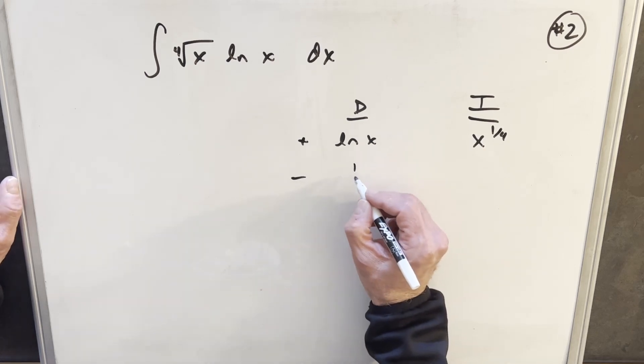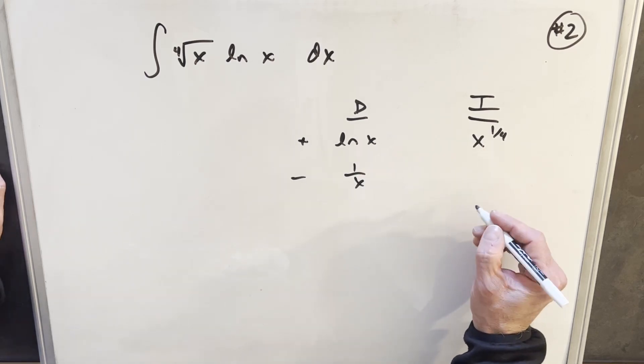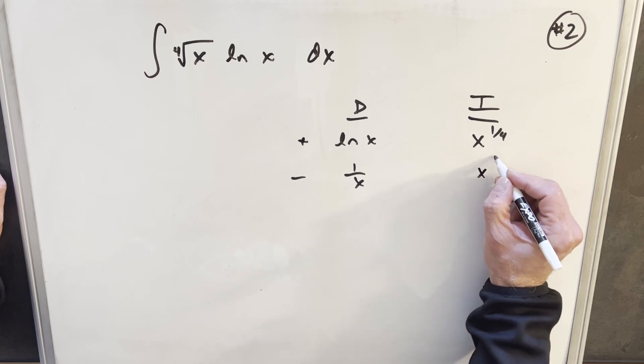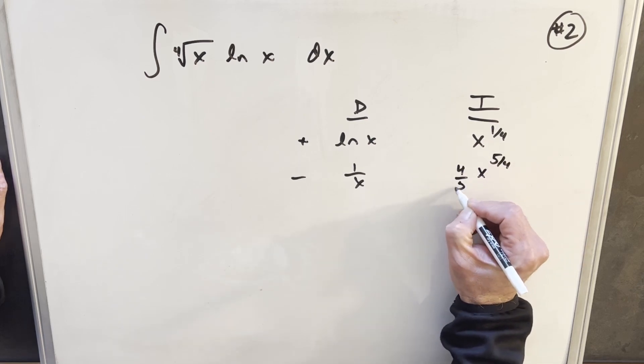Then I'll differentiate our natural log, and we're just going to have one over x. Integrating x to the one-fourth power rule, we have x to the five-fourths times four over five.